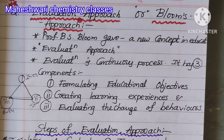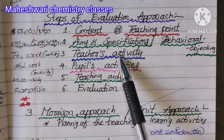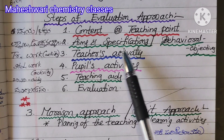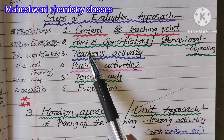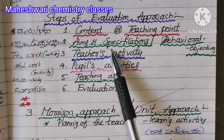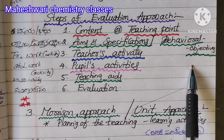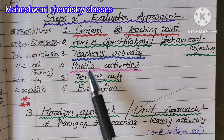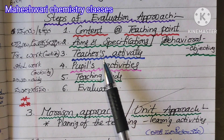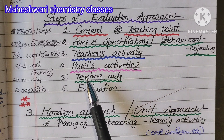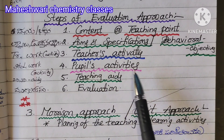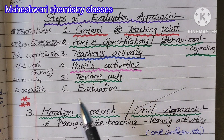The Evolution Approach, which is nothing but Bloom's Approach, has six steps. First is Content, which is nothing but Teaching Point. Second is Aims and Specifications, which are Behavioural Objectives. Third is Teacher's Activities. Fourth is Pupils' Activities. Fifth is Teaching Aid. Sixth is Evaluation.